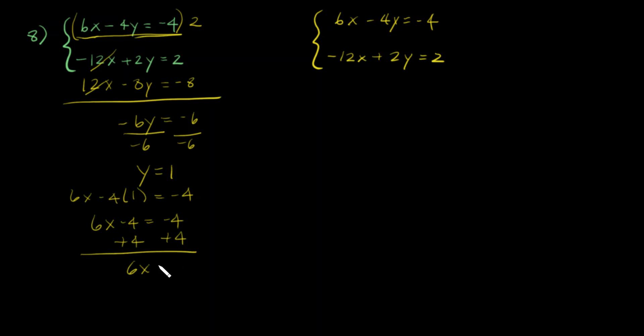So we get a 0 on this side. Divide both sides by 6, so x = 0. So our answer is (0, -1).